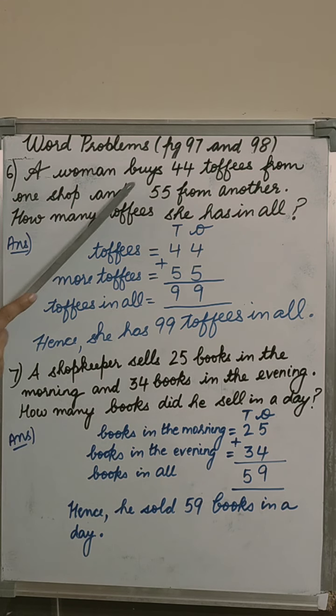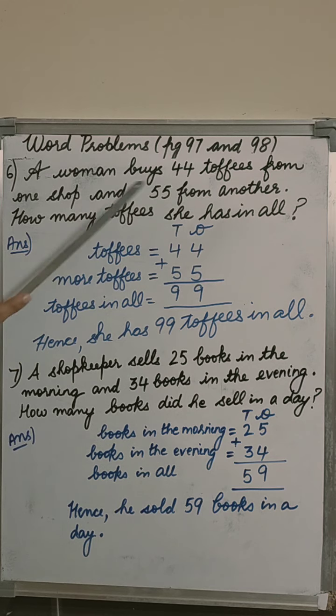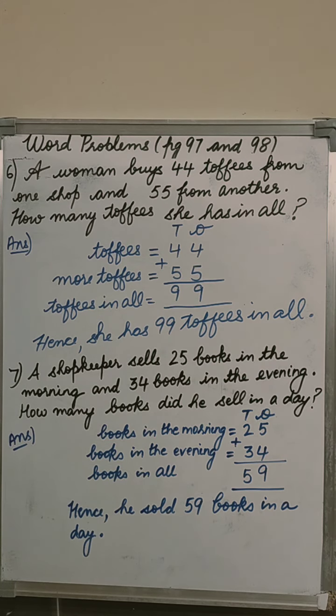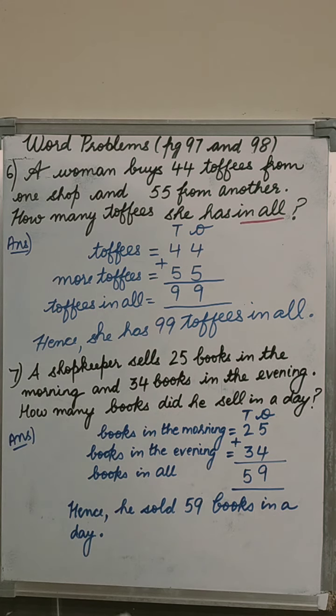Next question. A woman buys 44 toffees from one shop and 55 from another. How many toffees she has in all? In all means you have to add. Toffees 44, more toffees 55, toffees in all. Ones column, 4 plus 5, 9. Tens column, 4 plus 5, 9. Hence, she has 99 toffees in all.